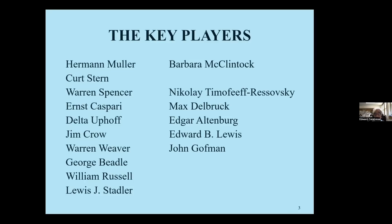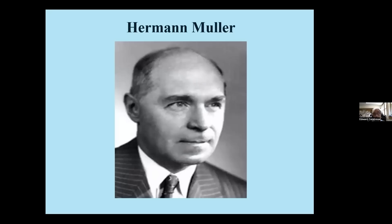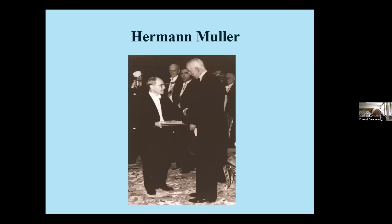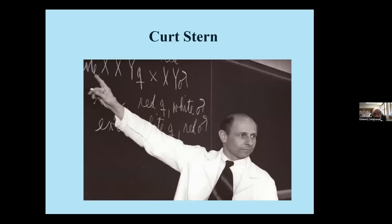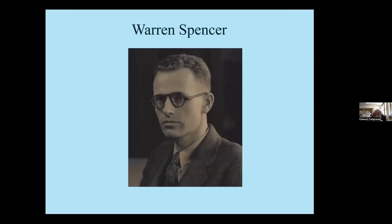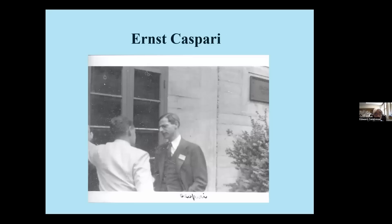The latest person to die was John Goffman, about 15 years ago. The person with the longest reach is Herman Muller — a Nobel Prize winner in 1946 for radiation genetics. Then we have Kurt Stern, who played a very critical role in radiation genetics, the Manhattan Project, and many other things — a close colleague of Herman Muller. Here we have Warren Spencer, who was integral to the Manhattan Project.